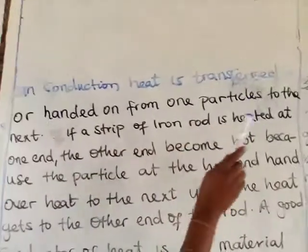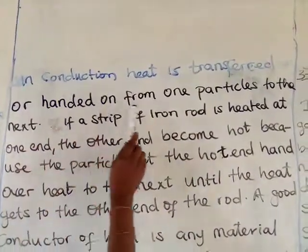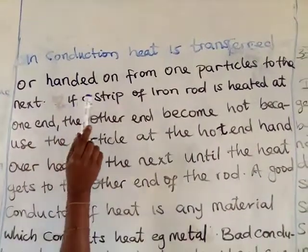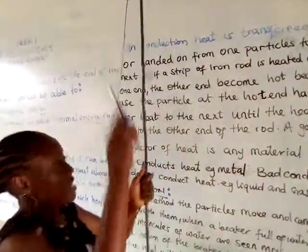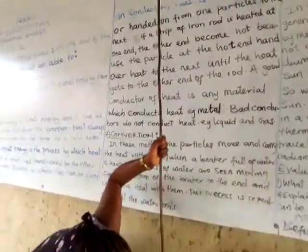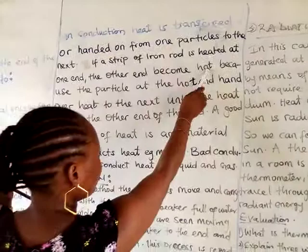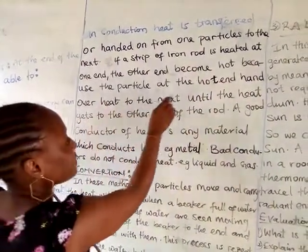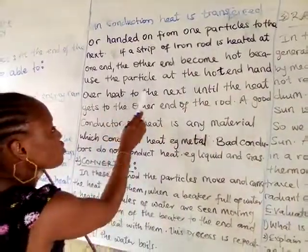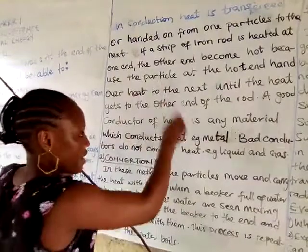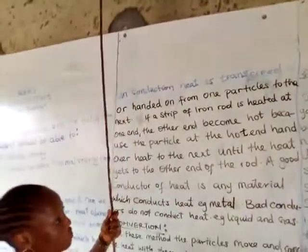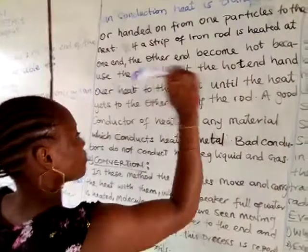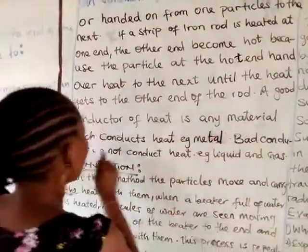In conduction, heat is transferred or handed on from one particle to the next. If a strip of iron rod is heated at one end, the other end becomes hot because the particles hand over the heat to the next particle, until the heat gets to the other edge. A good conductor of heat is any material which conducts heat.